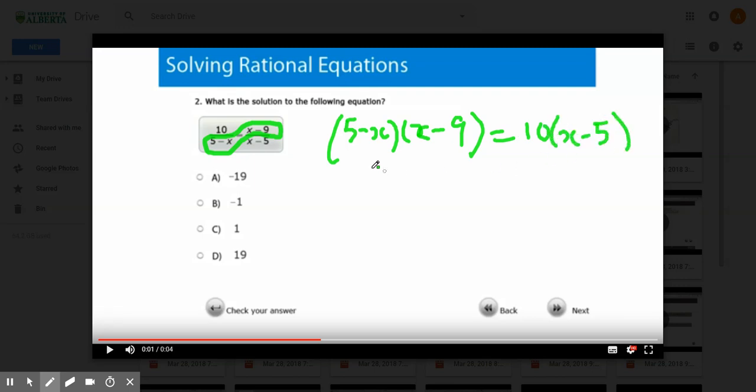Next, expand this bracket. You would have 5x, then times minus 9 which is minus 45, then minus x squared plus 9x equals 10x minus 50.